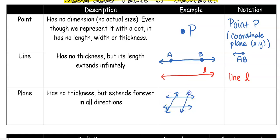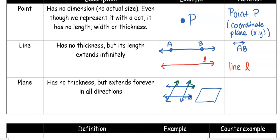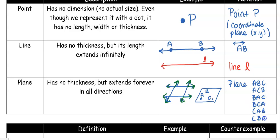A plane extends up, down, left, right — anywhere the plane is going, it extends. Normally when we draw a plane we draw it with a parallelogram, which can be confusing because it looks like a piece of paper. But it's not just a piece of paper — it extends in all directions forever. We just don't draw it that way, which confuses us. For a plane, we name it with any three points on the plane, so I could say plane ABC, ACB, BAC, BCA, CAB, or CBA.